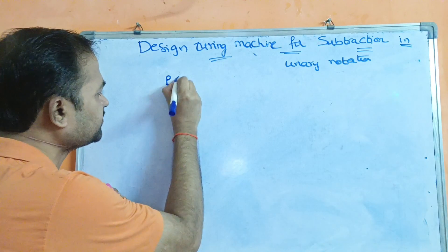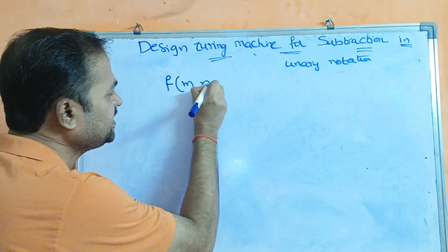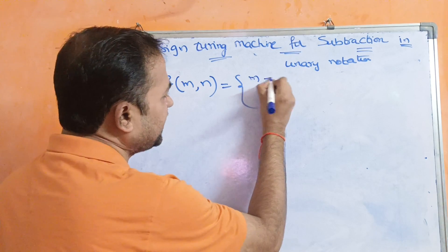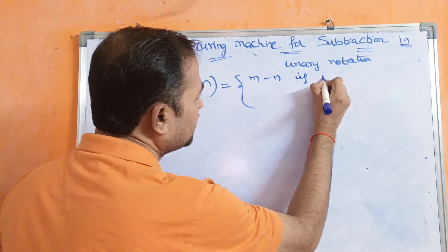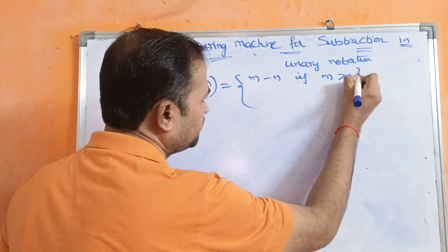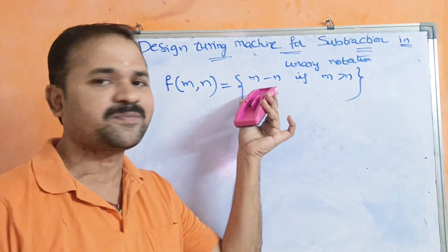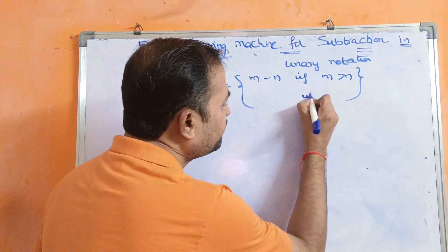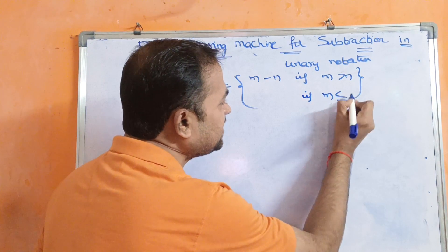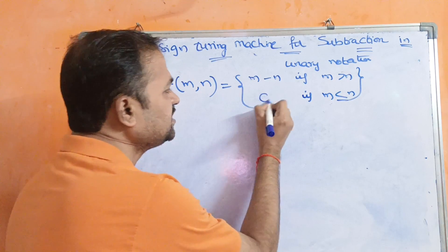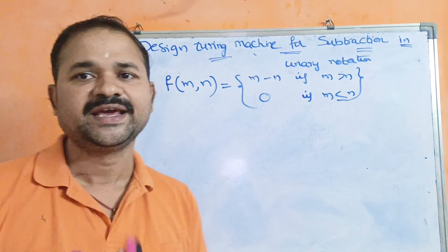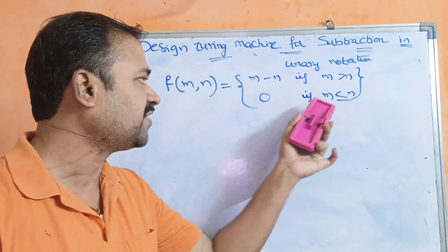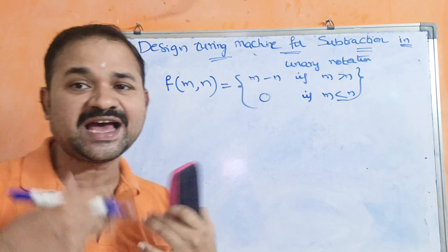The formula is: given first number m and second number n, f(m, n) equals m minus n if m is greater than n, whereas if m is less than or equal to n, the result is zero.